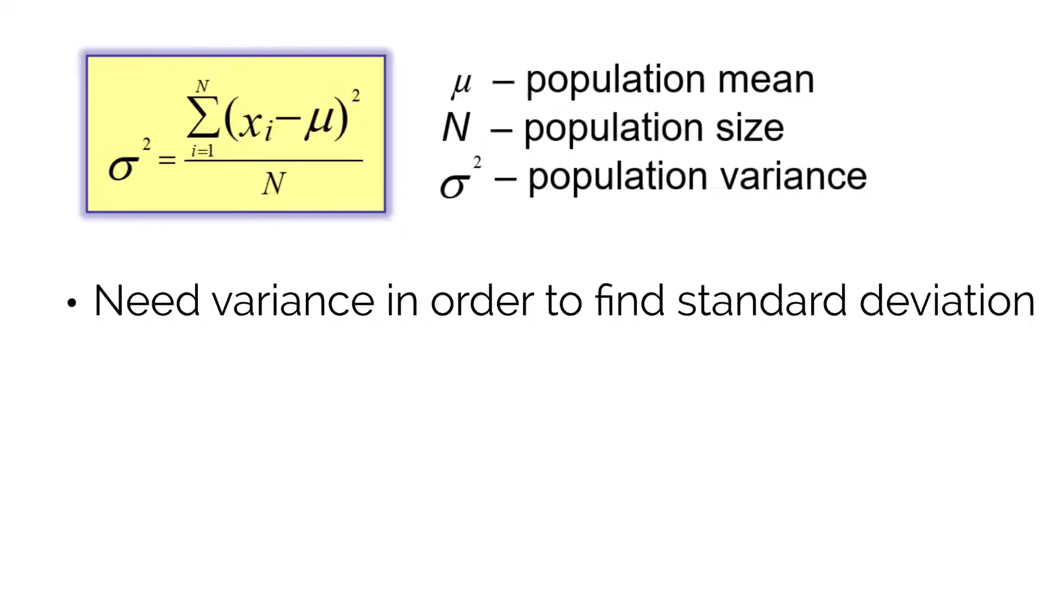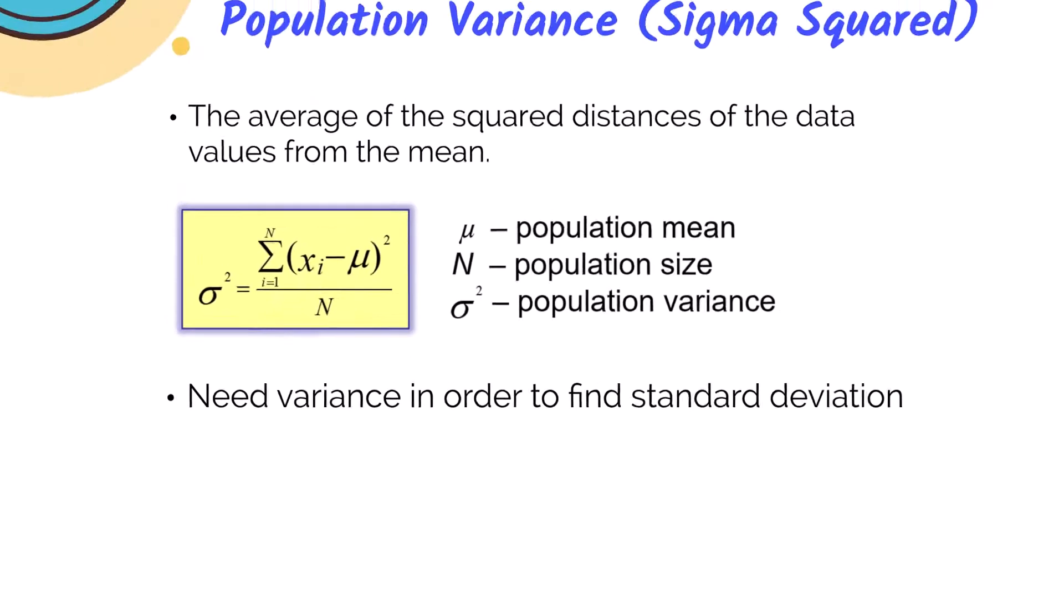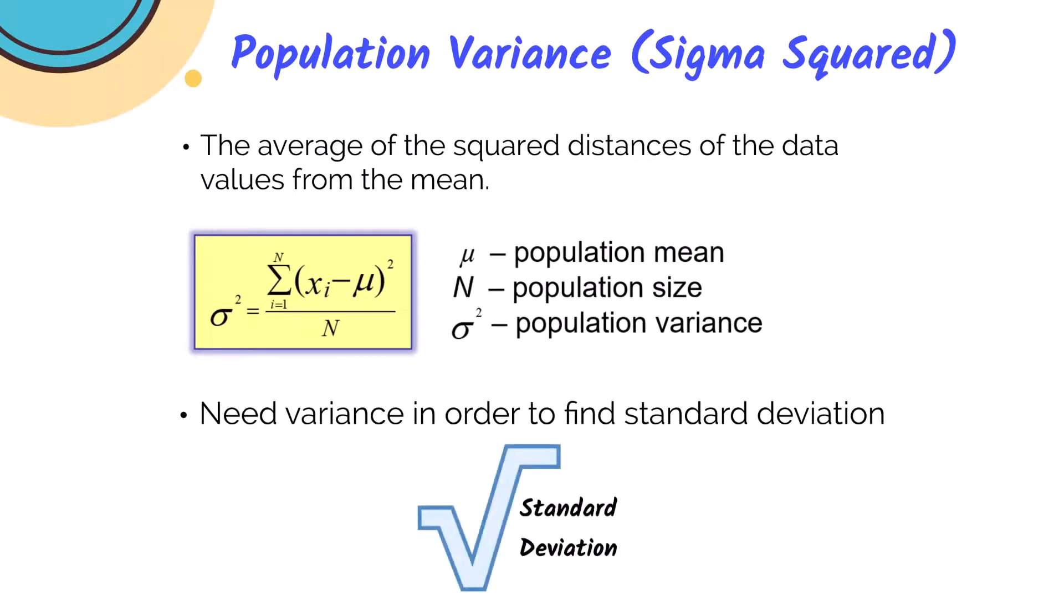So variance is required to find our next measure, which is the standard deviation. This is one of our most common measures of variation, so let's review that now.